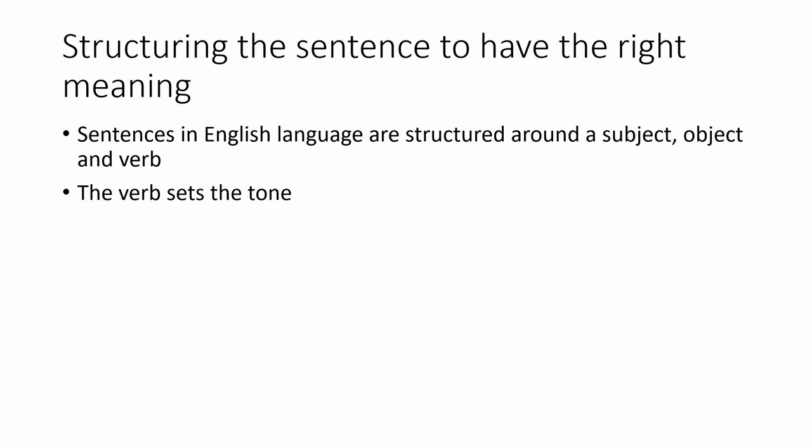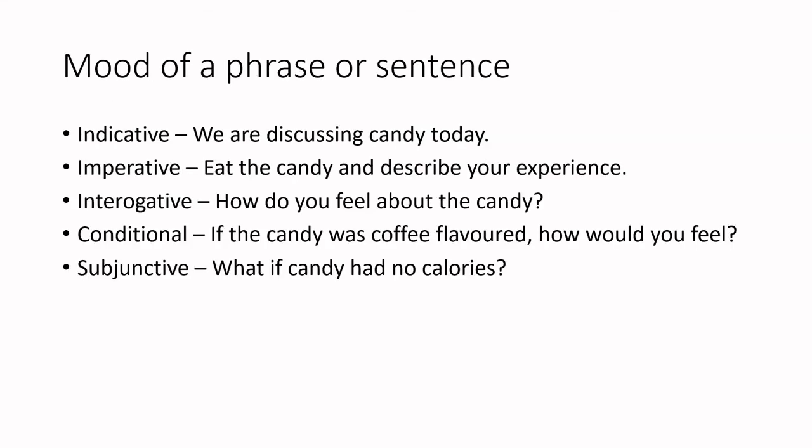You also want to be really careful about structuring the sentence to have the right meaning. In English, sentences have a subject, object, and verb, and that verb sets the tone — which is going to be really indicative of how people respond to a question. First is the indicative mood, which is just telling the facts: 'We are discussing candy today.' Then there is the imperative: 'Eat the candy' — I am telling you what to do, in a calm and direct manner: 'Eat the candy and describe your experience.' When you need people to act, you put the sentence into the imperative tone.